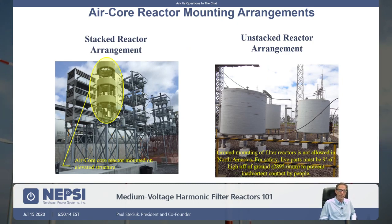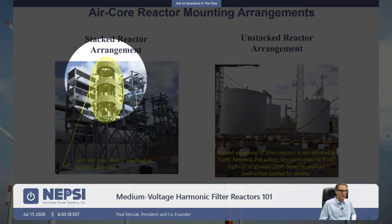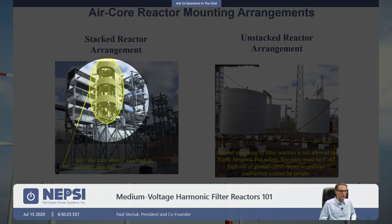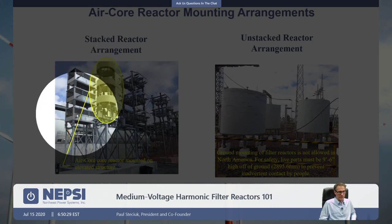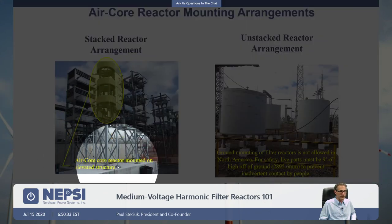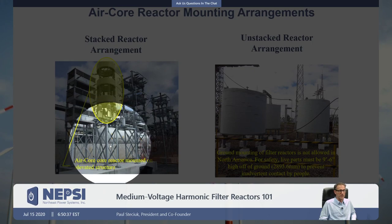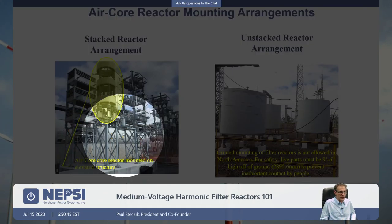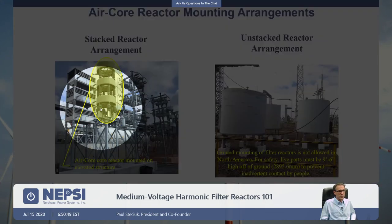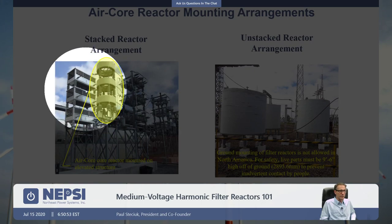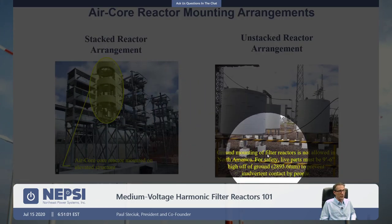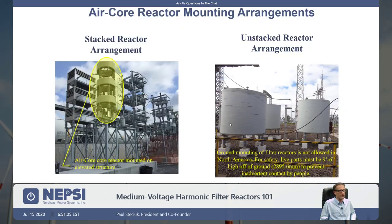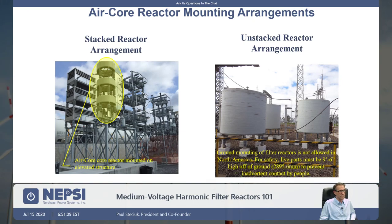For air core reactors, the picture on the left shows a stacked three-phase reactor. This is a high-pass filter — you can see a capacitor rack, reactors at three phases, and a resistor cage. Reactors in North America must be mounted on an elevating structure — approximately nine feet six inches (about three meters) of height is required so a person standing on a slab cannot touch live parts. The picture on the right shows reactors mounted at ground potential — from South America where they mounted those reactors at ground potential in an unstacked arrangement.